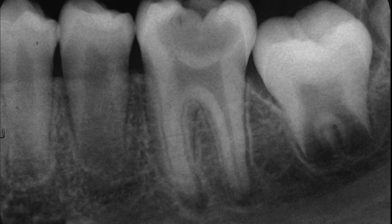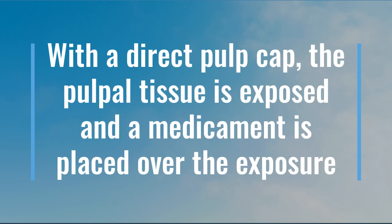In order to know whether the treatment is direct or indirect pulp capping, we need to remove the carious fully. If there is pulp exposure, it will be direct pulp capping; if not, it will be indirect pulp capping. For direct pulp capping, the pulp tissue is exposed and a medication will be placed over the exposure.